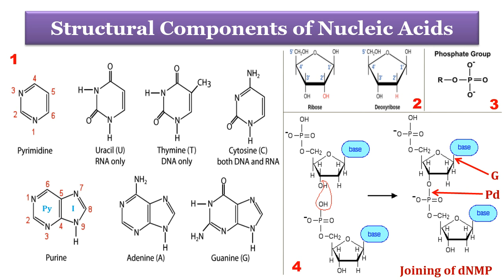The second structural image shows the 5-carbon member ring ribosugar, with ring atoms numbered as prime to distinguish them from the carbon atoms of the nitrogenous base. The carbon at position 2' of the sugar ring has a different attachment in DNA and RNA. In RNA, carbon 2' has an OH hydroxyl group, so it is called ribosugar and hence Ribonucleic Acid RNA. Whereas in DNA, carbon 2' has only an H atom — it is devoid of oxygen — so it is called deoxyribosugar and hence Deoxyribonucleic Acid DNA.